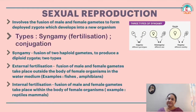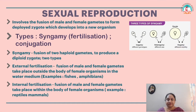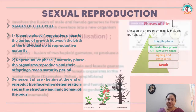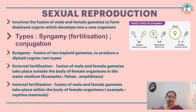Internal fertilization is where the fusion of male and female gametes takes place within the body of the female organism. Examples are reptiles and mammals. You can have a look at the picture there. We also learned about the different kinds of syngamy prevalent among living organisms.